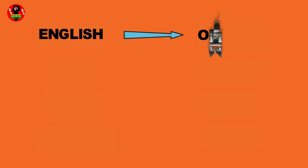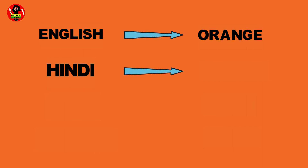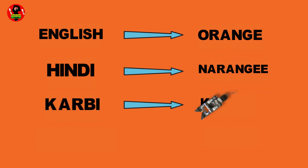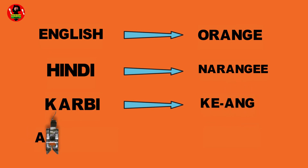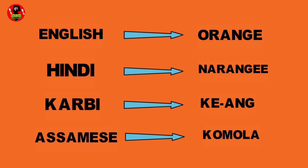English: Orange. Hindi: Narangi. Karbi: Kiyang. Assamese: Kumalah.